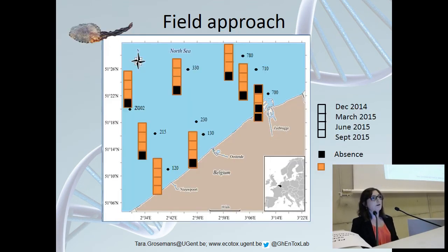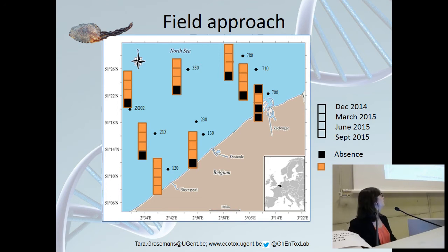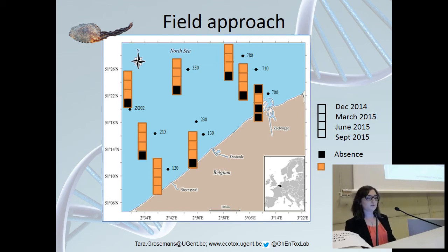We developed a universal jellyfish DNA sequence called a PRIMER that targets all jellyfish species in the North Sea, and we sampled again along nine different stations for four seasonal months. This data only shows us the absence or presence of jellyfish species, but it doesn't tell us which species are there.